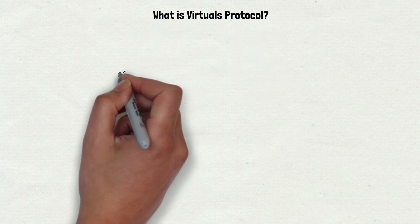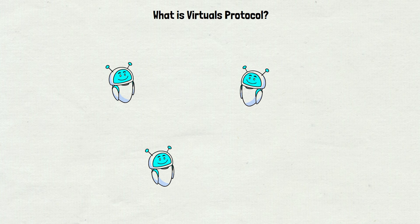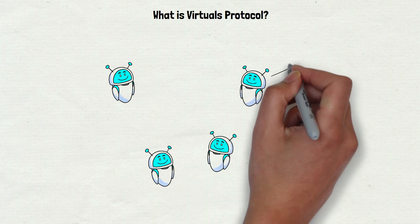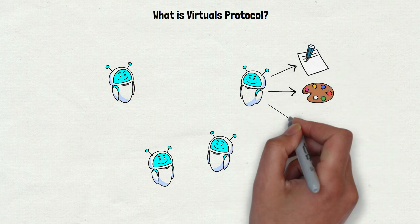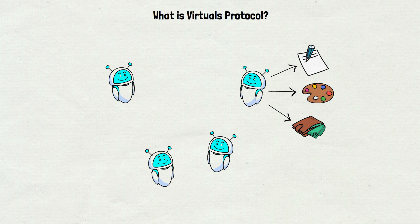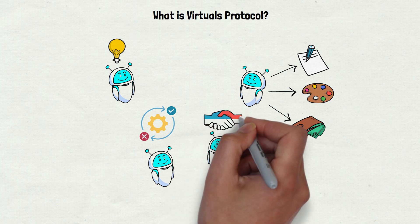So, what exactly is VIRTUALS PROTOCOL? Picture this: a busy marketplace where instead of people selling stuff, you've got AI agents, which is a fancy way of saying smart programs, offering services like writing reports, creating art, or managing your crypto wallet. These aren't just basic tools, they are programs that can think, decide, and make deals on their own.